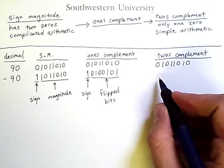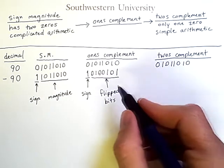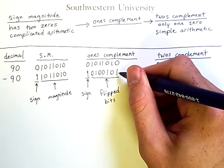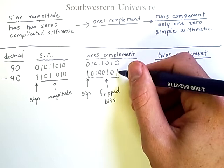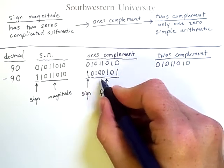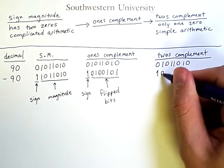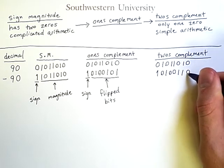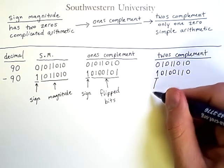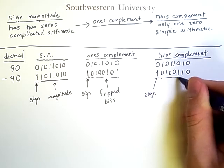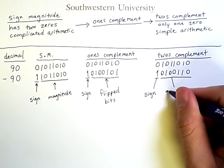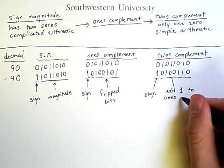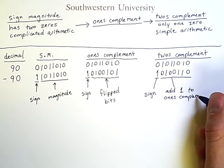To get the negative representation in two's complement, we take the one's complement representation and add 1 to it. So if we add 1 to this binary number, 1 plus 1 will be 0 and a 1 will carry into this slot. But the remainder of these digits will be the same. So our result will be 1, 0, 1, 0, 0, 1, 1, 0. So this still indicates the sign. But this is the result of adding 1 to the one's complement representation.